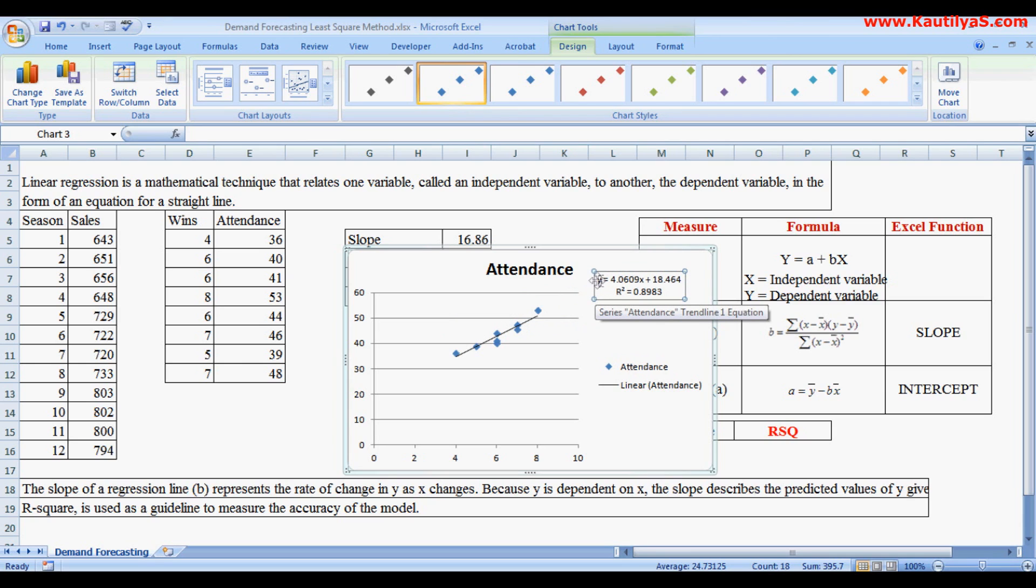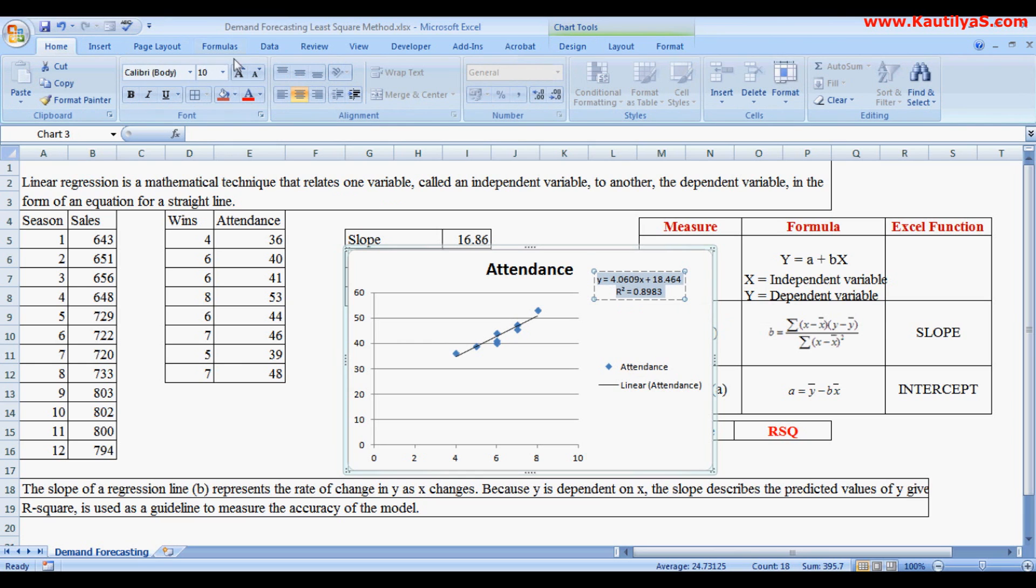We can increase the font size. Your regression equation is here, or least squares method equation: Y equals 4.0X plus 18.64. Here this is the slope, and here this is the constant, and your R-square value.